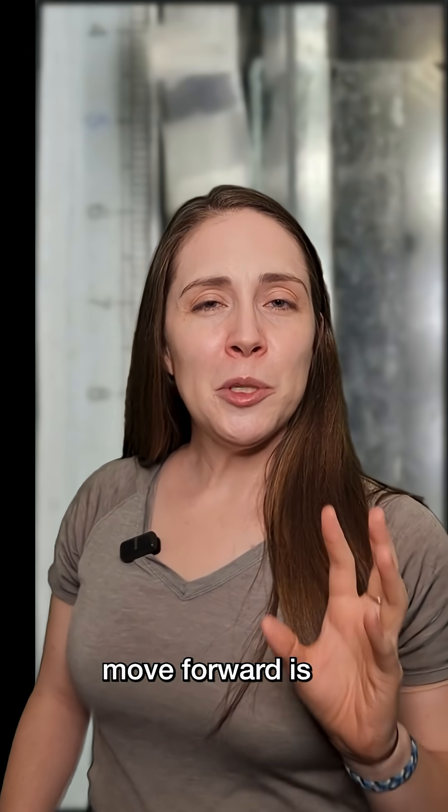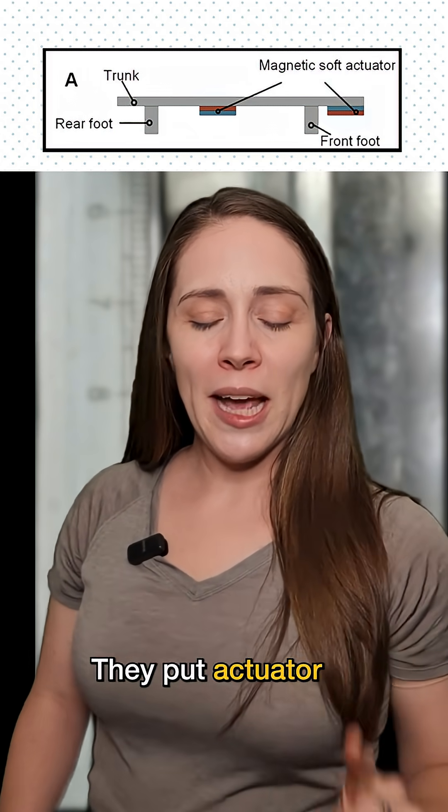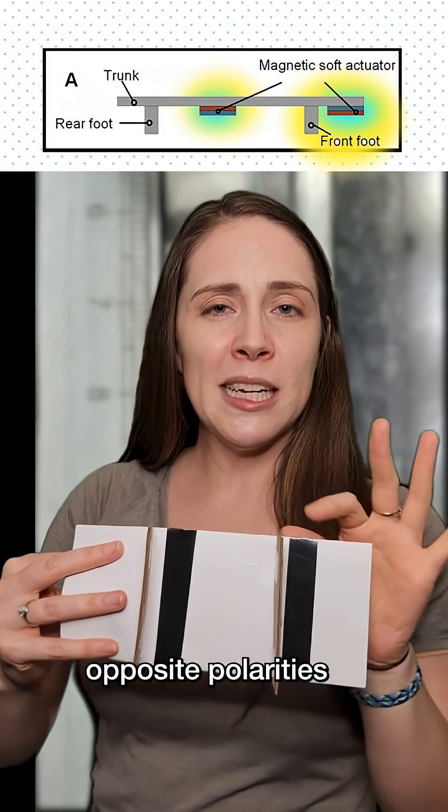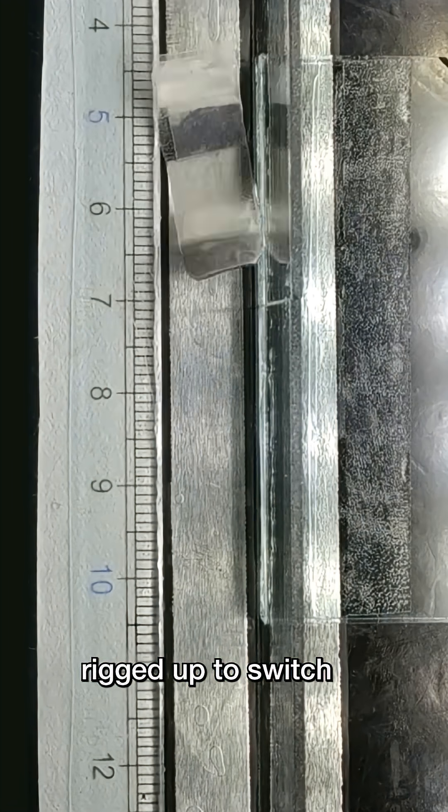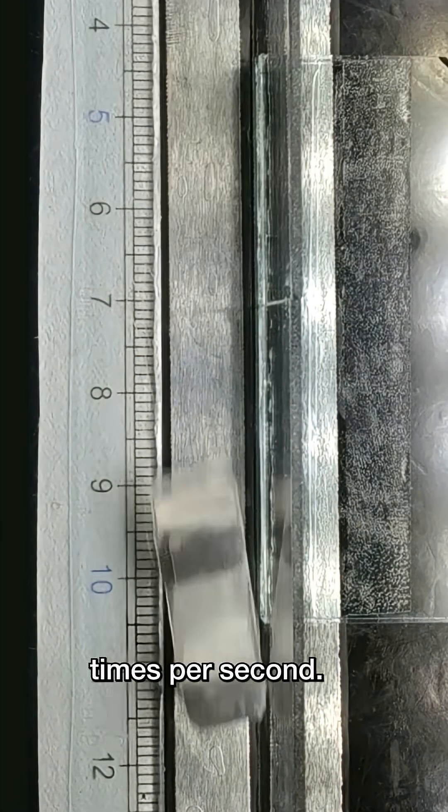The way they got the inchworm to move forward is really interesting. They put actuator strips with opposite polarities on the head and torso of the robot. Then they set the robot on top of an electromagnet rigged up to switch its polarity 11 times per second.